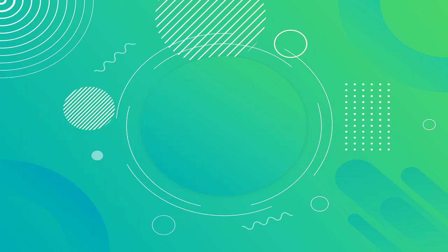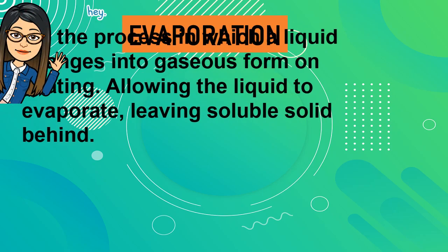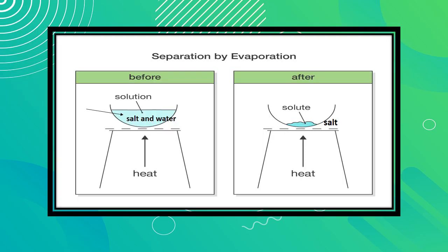Another way of separating a mixture is by means of evaporation. Evaporation is the process in which liquid changes into gaseous form on heating, allowing the liquid to evaporate and leaving the soluble solid behind. For example, a salt and water solution can be separated through evaporation — by using heat, the water turns into vapor, leaving the salt behind.